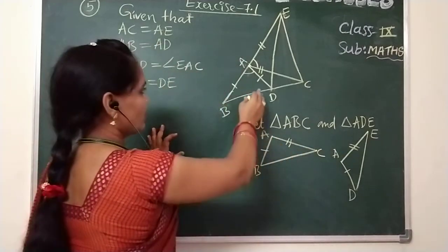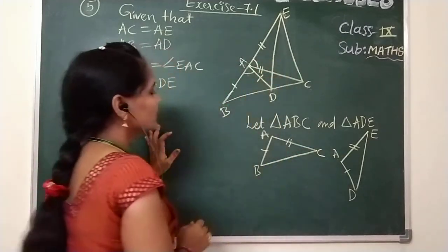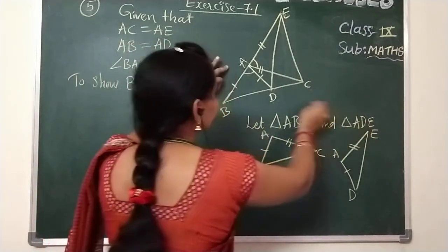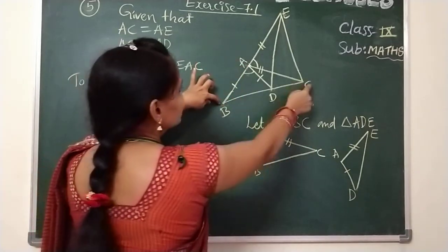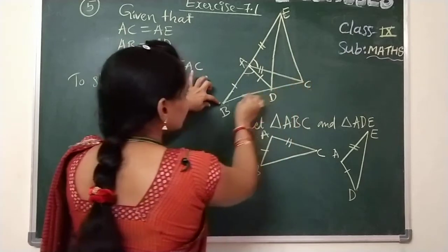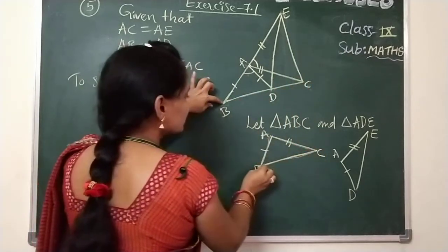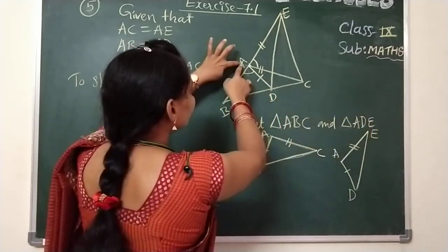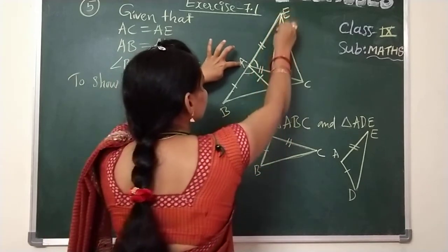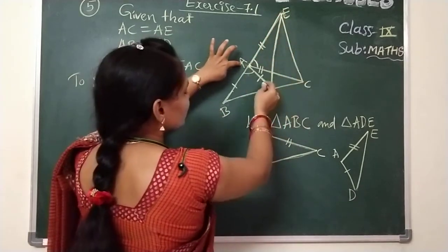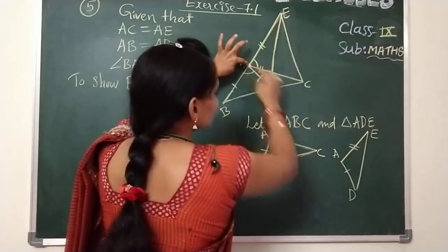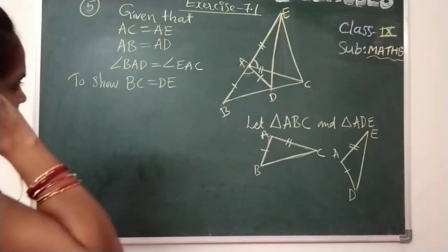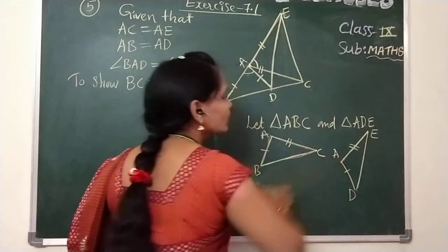I am taking them separately so you will not get confused. Let triangle ABC and triangle ADE. Triangle ABC means this triangle — I have drawn it here separately, same as this triangle ADE.